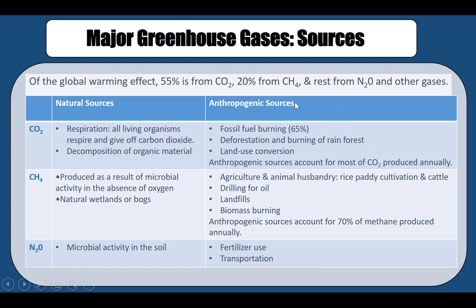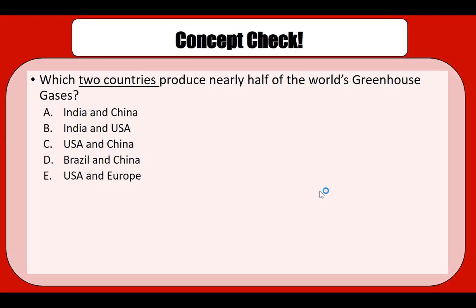So carbon dioxide, methane, and nitrous oxide all have natural sources as well as anthropogenic sources. Over time, anthropogenic sources have become extremely important and have actually overtaken natural sources in the amount of these gases produced. Because of this, we are seeing the enhanced greenhouse gas effect discussed earlier.